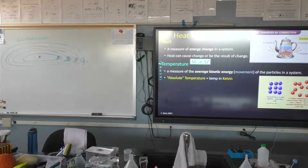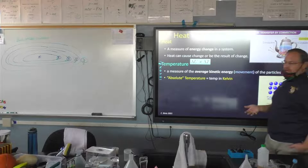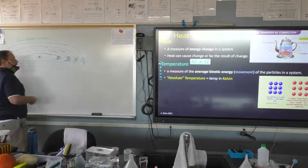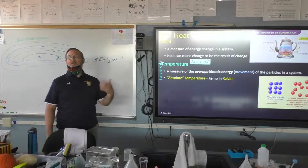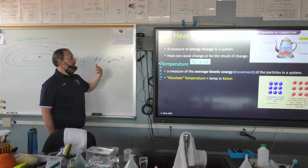Delta U is the absolute internal energy — all of the energy contained in a system. Delta T is the average kinetic energy of the particles. It's also important to remember that in this unit, in every unit in science, we don't use Celsius — we use Kelvin, because Kelvin has no negative values. You can't have negative energy. The formula for kinetic energy is one-half mv².